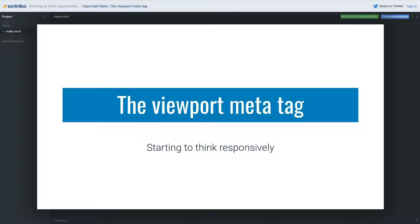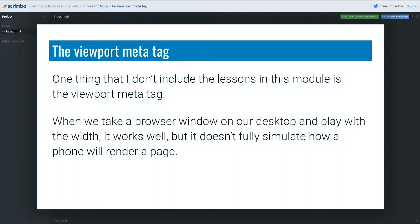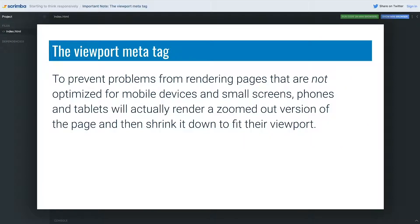This is a really important note before you move on or graduate from Scrimba, or before you start doing things on your own. We have a viewport meta tag that I didn't include in the lessons of this module. When we look in the browser window on our desktop and play with the width, it works really well — but this doesn't fully simulate how a phone will render a page. The best case scenario is actually testing on your actual phone, or multiple phones, an iPad, an Android tablet — we want to test across different devices. The reason we have this viewport meta tag, which we'll see in a second, is that mobile devices started doing something to prevent problems in how pages were rendered.